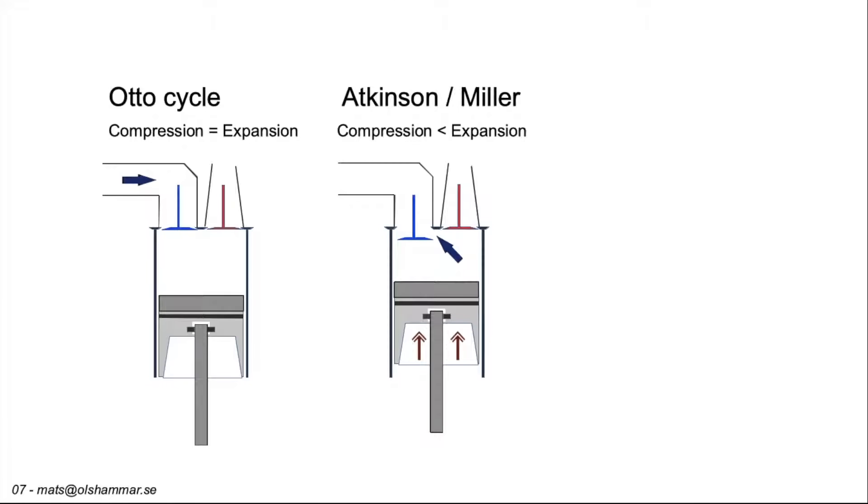The Atkinson cycle keeps the intake valve open a little longer so that some air is pushed out again. The compressed volume will then be less than the volume expanded. This is more fuel efficient but gives less power than the Otto cycle.